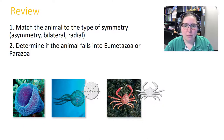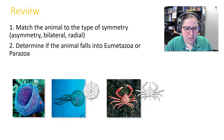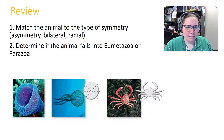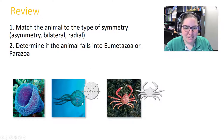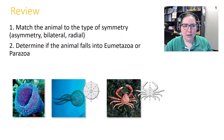Let's match animals to their type of symmetry and determine if they fall into Eumetazoa or Parazoa. A sponge is asymmetrical and Parazoa. A jellyfish shows radial symmetry and is Eumetazoa. The last organism is bilaterally symmetrical and Eumetazoa.